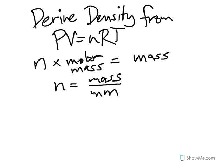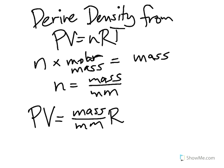Now, if that's the case, we can substitute that into the equation for n. So that gives you PV is equal to mass divided by molar mass times RT.